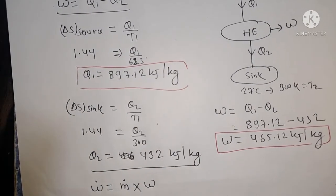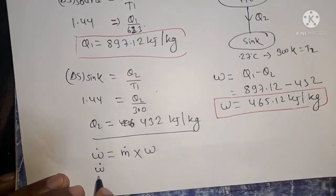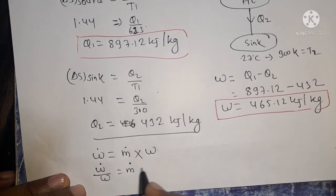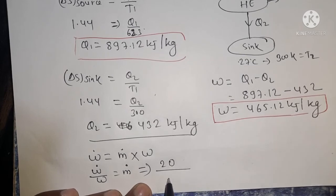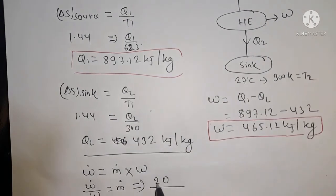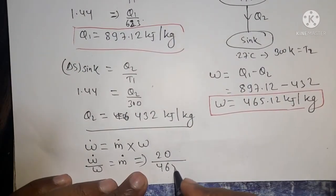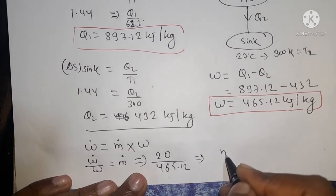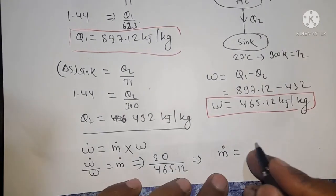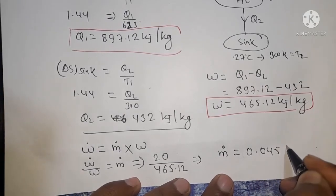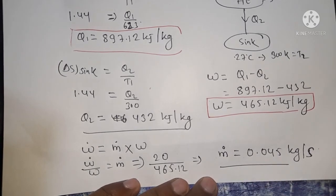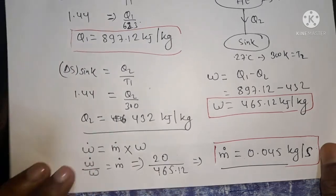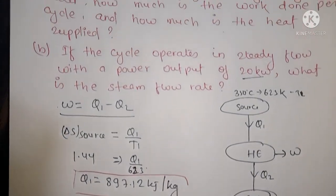Using the formula: Power = mass flow rate × work output per kg. Therefore mass flow rate = Power / Work = 20 kW / 465.12 kJ/kg = 0.043 kg per second. So the steam flow rate is approximately 0.043 to 0.045 kg per second.